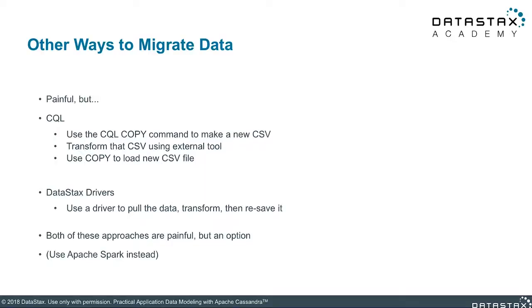Although Spark would be one of the most convenient ways to migrate your data, there are some other alternatives. They may not necessarily be better, but in some cases it may make more sense. For one, you can use the CQL shell tool to export your data using the copy command. With the data saved as a CSV file, you can then transform the data as needed for your new data model and then copy it back into the database. Another way would be to use the DataStax drivers to actually query the data, transform as necessary on the application side, and then write it back to the new table. Maybe it's better you just stick with Spark then.